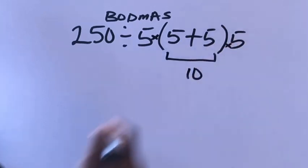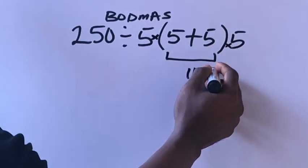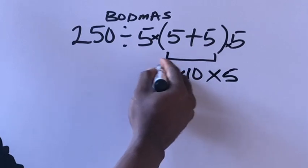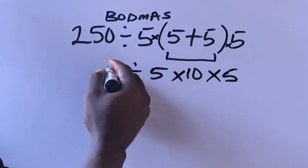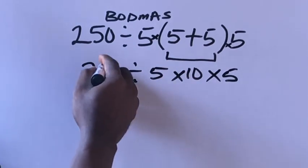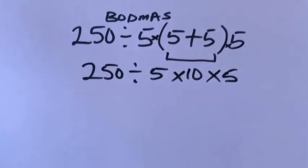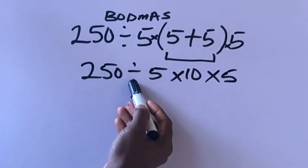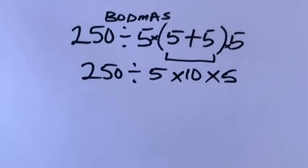So there's a multiplication sign here. We write our multiplication times 5 divided by 250. Now in our order of operation, don't forget that division comes before multiplication. This division always comes before multiplication.